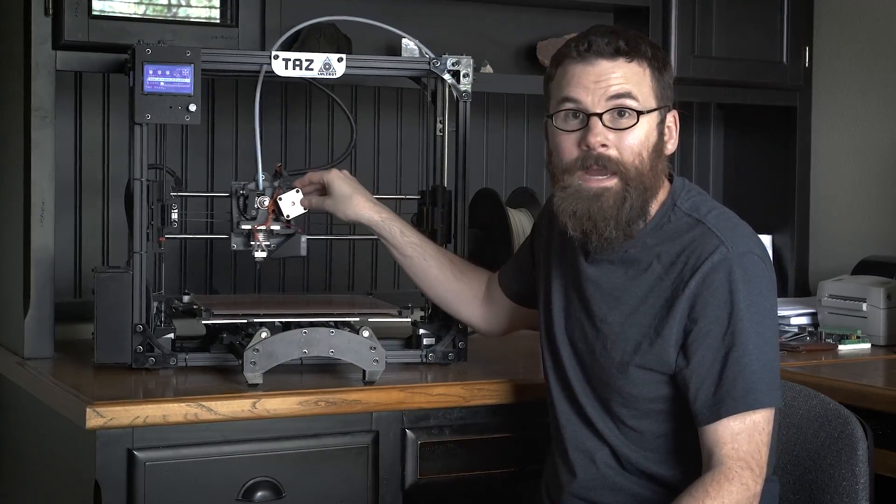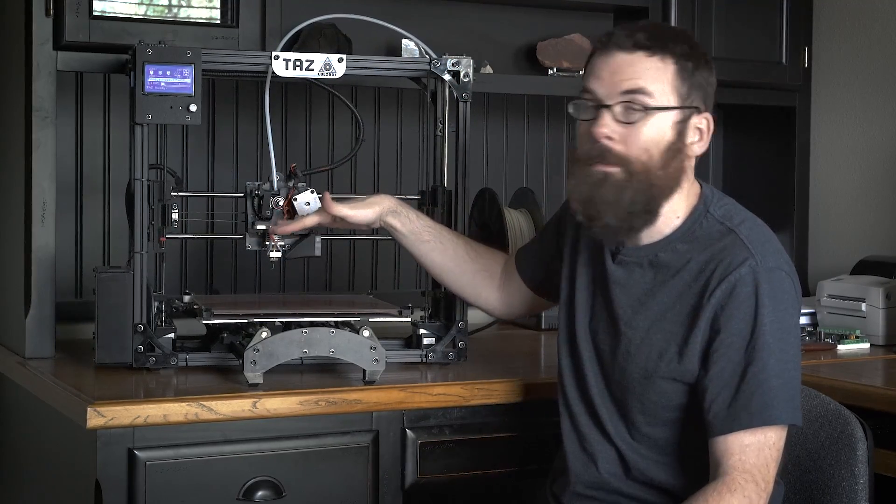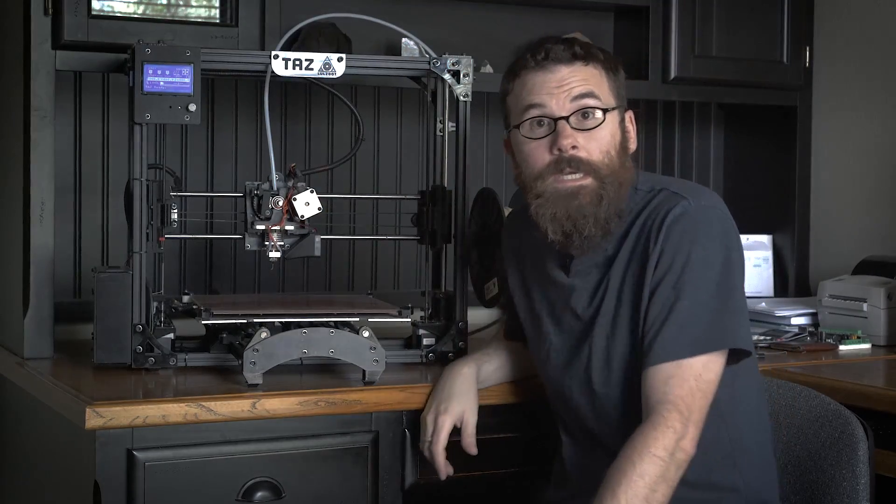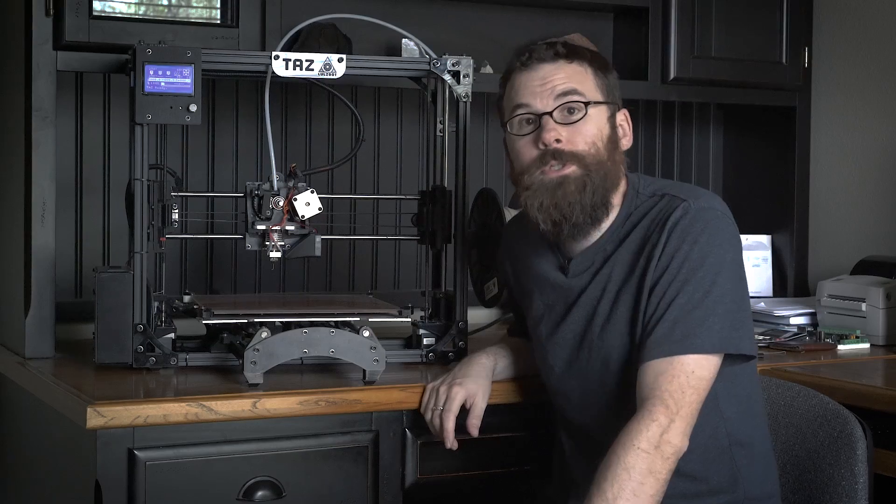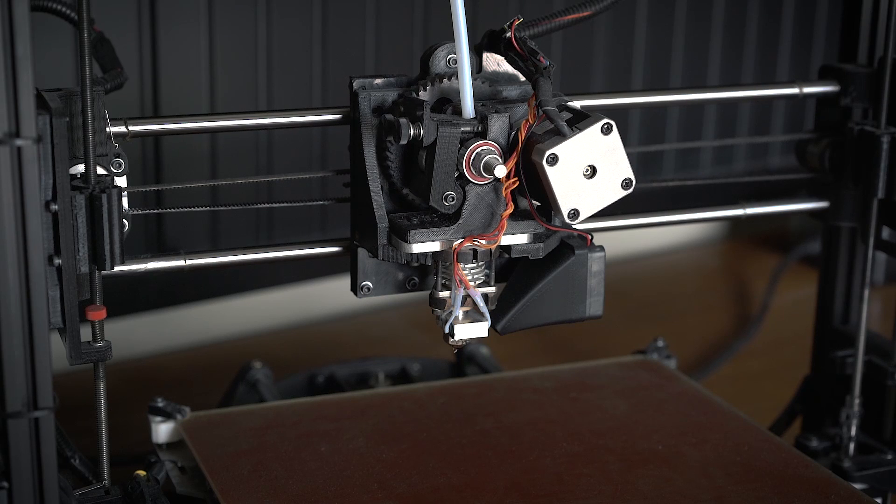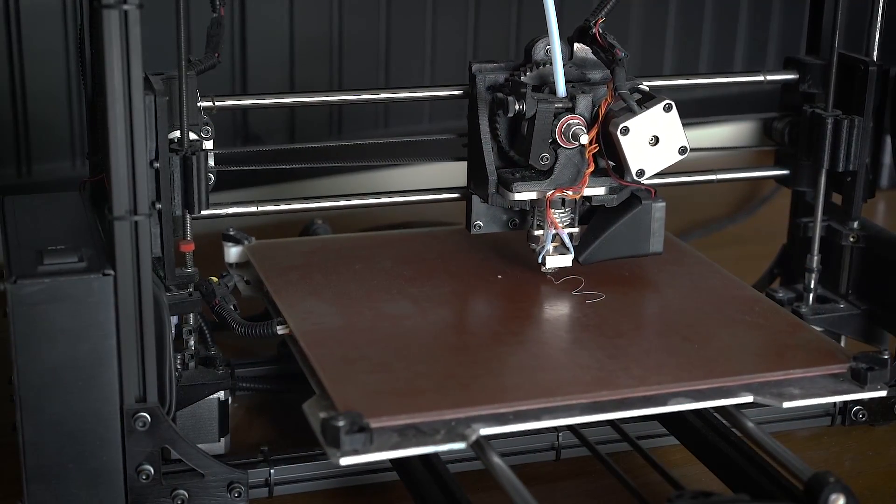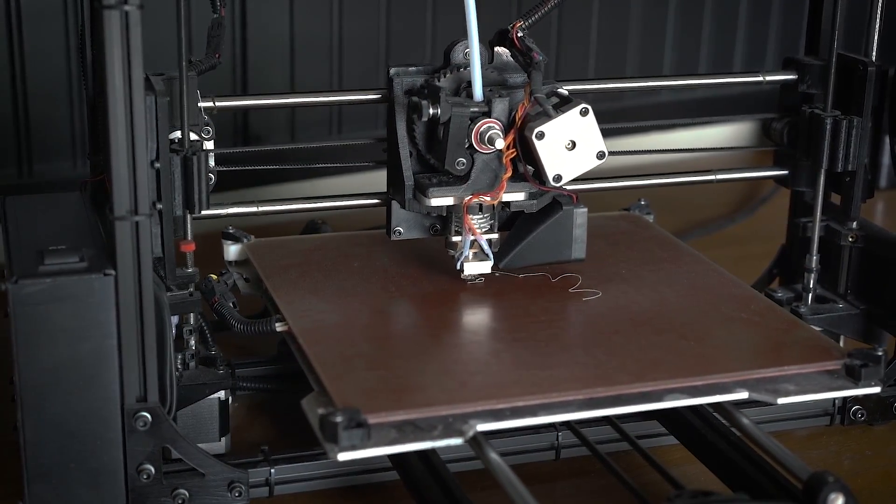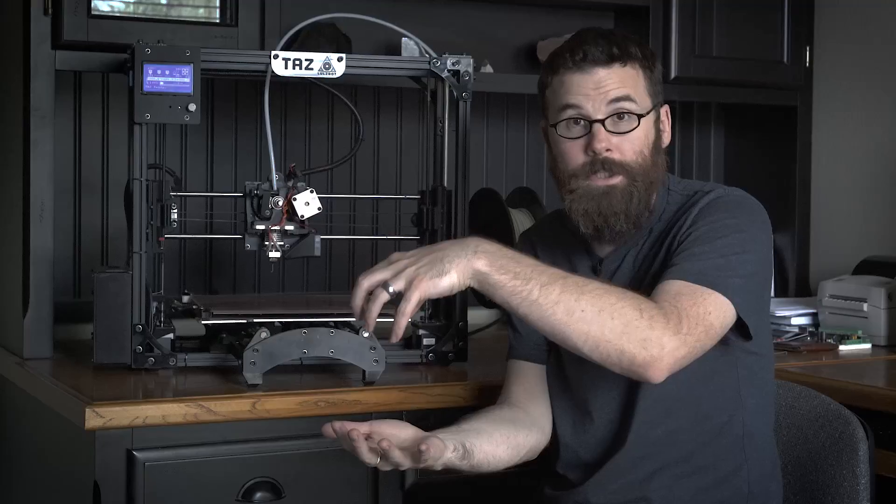It interprets G-code into machine movements. So it will translate those movements into moving the Y platform here, or we've got an X up here, and then over here and here, the whole assembly here moves up and down for the Z movement. In addition to the X, the Y, and the Z movement, you also have a head, which in this case is an extruder head, that will move this gear, which will feed filament into the extruder head, and then it will extrude out the bottom, and it will use that to build up a part.